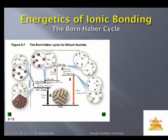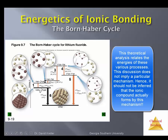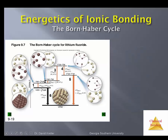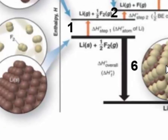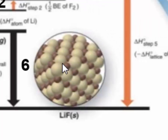The two scientists, Born and Haber, realized that the formation of ionic compounds can be broken down into the various steps that the chemical system must go through — can be thought of as going through — as they move from the form in which they exist as elements to the form in which they exist in the compound. Initially, those atoms are in the form of elements: lithium is in the form of a solid, and fluorine is in the form of diatomic molecules. In the final state, those atoms are in the form of the lattice — lithium and fluoride ions that have packed together to form a lattice.